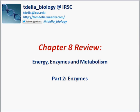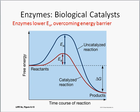Let's take a look at chapter 8 part 2: enzymes. We're continuing ideas related to energy, enzymes, and metabolism. Enzymes are biological catalysts — they speed up chemical reactions without being changed themselves. We'll often be talking about proteins that are enzymes: specialized proteins with a specific shape that can carry out specific chemical reactions. Not all proteins are enzymes and not all enzymes are proteins — RNA can also be enzymatic — but the majority we'll discuss are proteins.